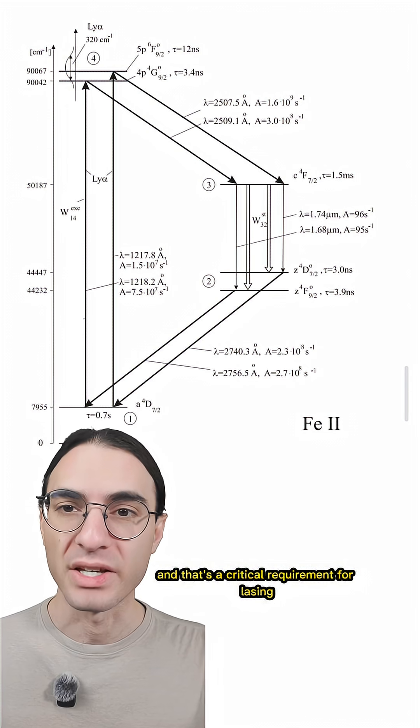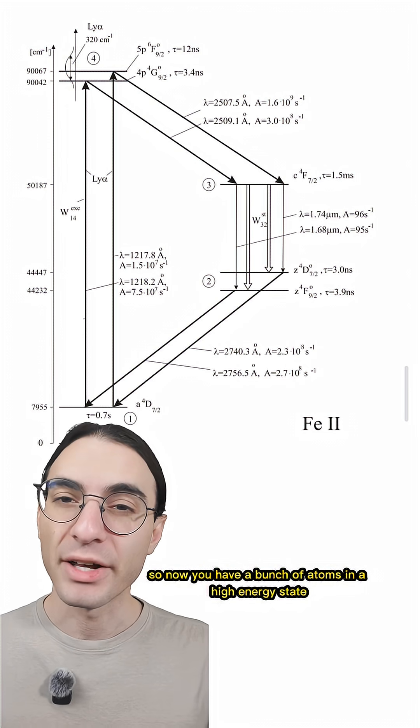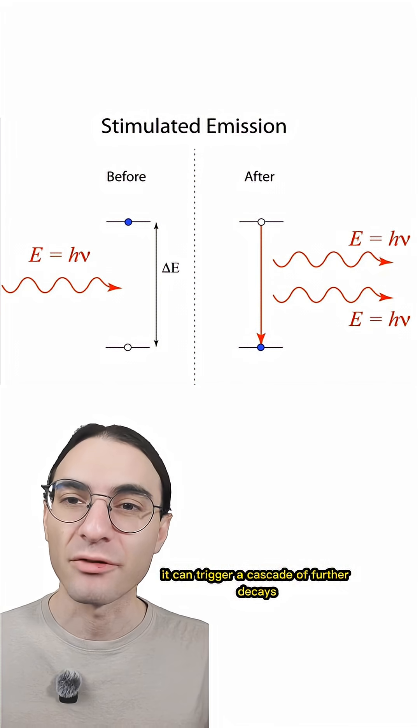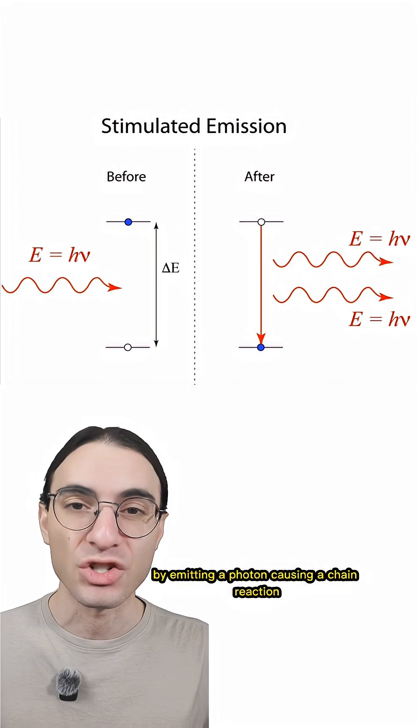And that's a critical requirement for lasing. So now you have a bunch of atoms in a high energy state and fewer in the state they'd like to decay into. And when one decays, it can trigger a cascade of further decays by emitting a photon, causing a chain reaction.